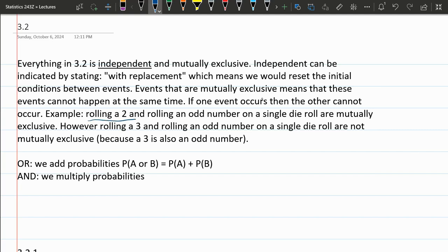So my example here, if you roll a 2 and an odd number, you cannot roll a 2 and also an odd number, so those would be mutually exclusive. But if you're rolling a 3 and an odd number, those can both happen at the same time, because 3 is odd, so you could roll a 3 and also an odd number.